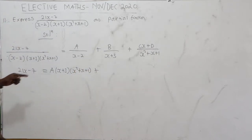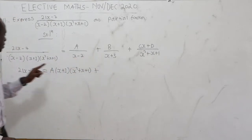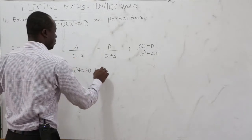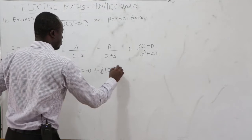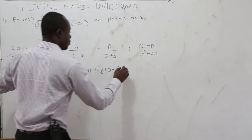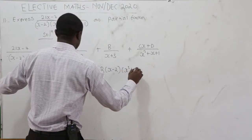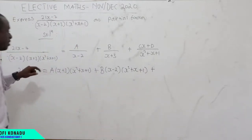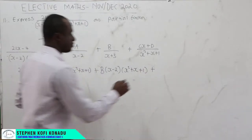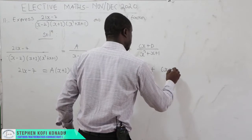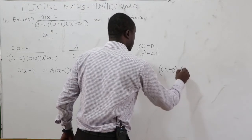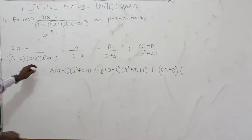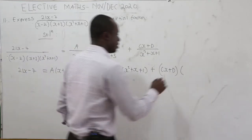We must be careful. When we multiply the B term, x plus 3 cancels, leaving B times (x minus 2)(x squared plus x plus 1). For the Cx plus D term, multiplying gives (Cx plus D) times (x minus 2)(x plus 3).